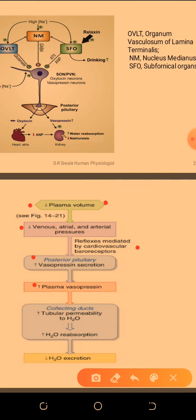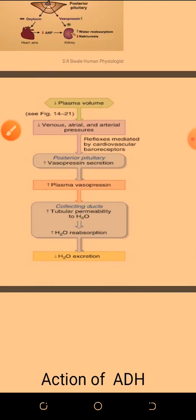As a result, plasma vasopressin (ADH) levels increase. ADH increases tubular permeability to water and increases water reabsorption, reducing water excretion so that plasma volume returns to normal. We discussed this mechanism under renal physiology.